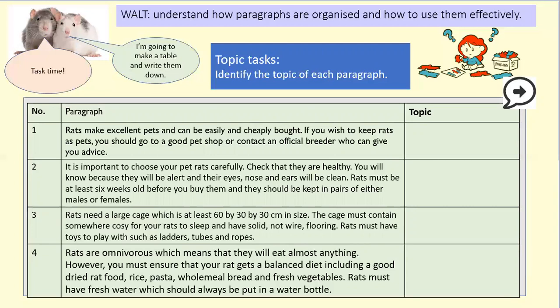Rats need a large cage which is at least 60 by 30 by 30 centimetres in size. The cage must contain somewhere cosy for your rats to sleep and have solid, not wire, flooring. Rats must have toys to play with such as ladders, tubes and ropes. Rats are omnivorous, which means they will eat almost anything; however, you must ensure your rat gets a balanced diet including good dried rat food, rice, pasta, wholemeal bread and fresh vegetables. Rats must have fresh water, which should always be in a water bottle. Now pause the video and write down what each paragraph is about.